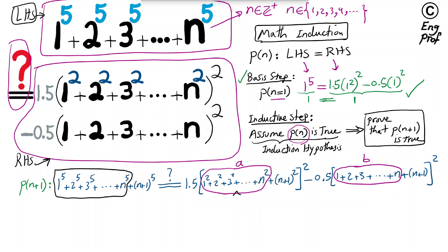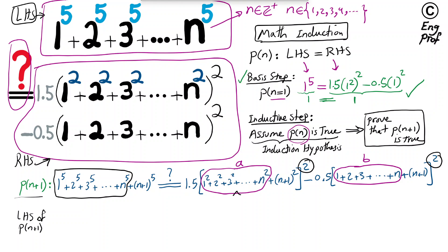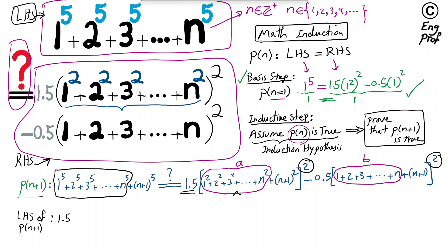To prove the equality, I'll start from the left-hand side and work toward the right-hand side. We expand: the right-hand side of P(n+1) becomes 1.5 times (A + (n+1)²) squared minus 0.5 times (B + (n+1)) squared. This gives 1.5·A² minus 0.5·B².